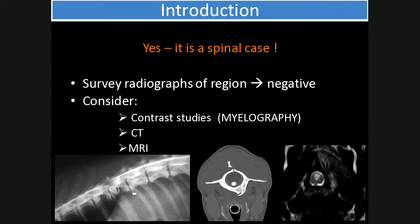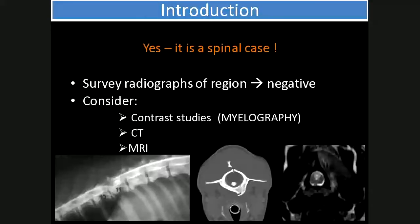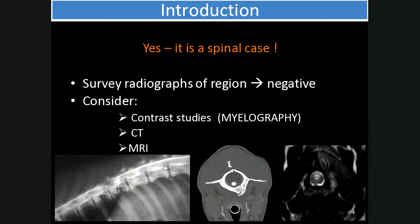Myelography is illustrated in the first left-hand image. That is when iodinated contrast medium is injected into the subarachnoid space. If you look carefully, the white opaque line at the top is the dorsal column of contrast agent, and the bottom column is the ventral column. In between is the spinal cord, so it gives an indirect visualization of the spinal cord. It can be performed with practice, but it is an invasive procedure requiring general anesthesia, and there may be complications associated with it.